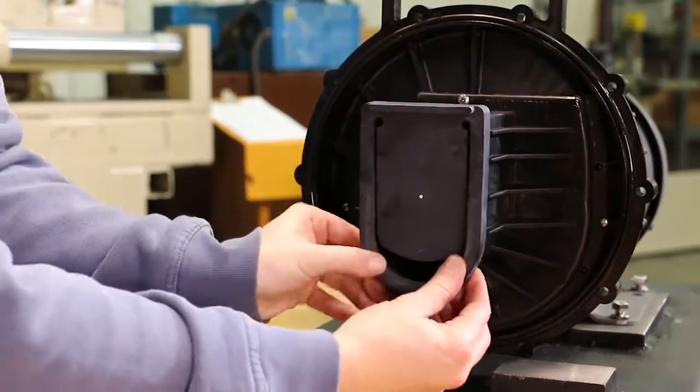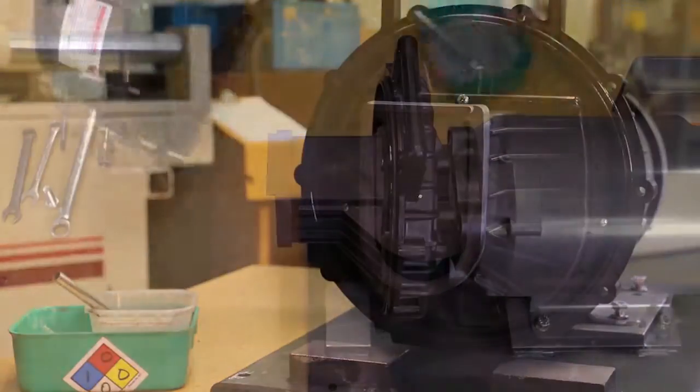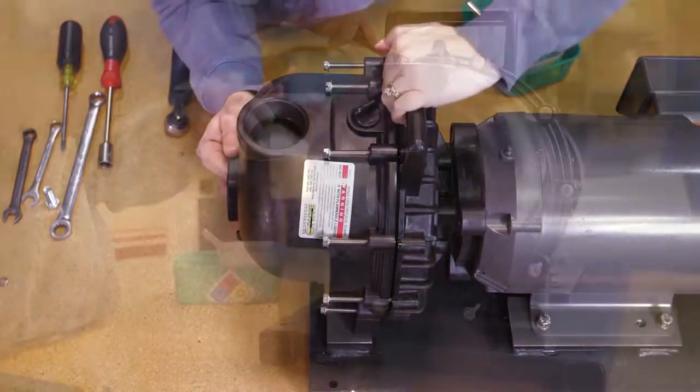Install the check valve onto the snout of the volute. Install the pump body with the outlet flange facing up.